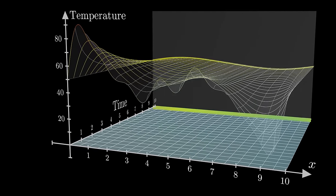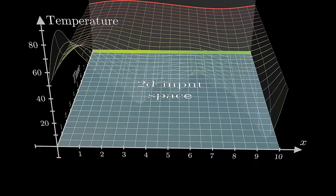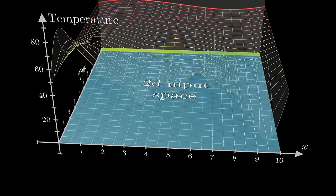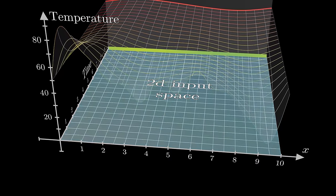Because we're thinking of this temperature function with multiple dimensions to its input space, in this case 1 for space and 1 for time, there are multiple different rates of change at play.